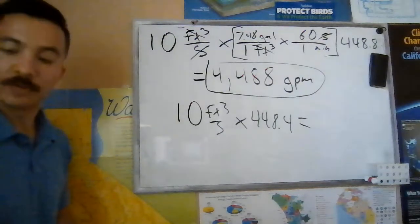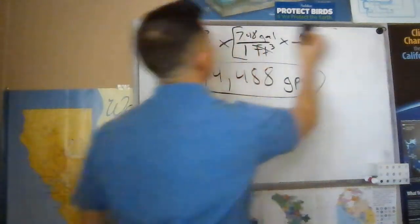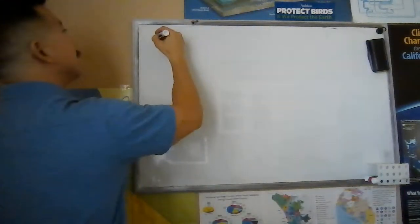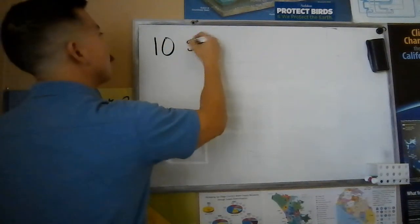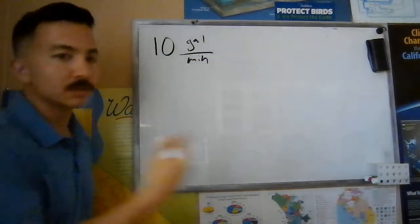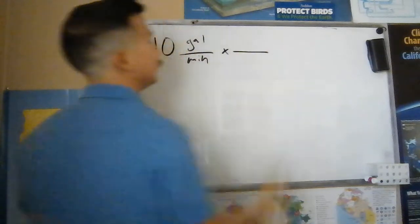You can use this shortcut going the other way, which we're going to do now. So let's look and let's say now we're given, let's just say 10 gallons per minute. And we are trying to convert to cubic feet per second. We're just going to go the other way. So let's set it up first, like we always do.